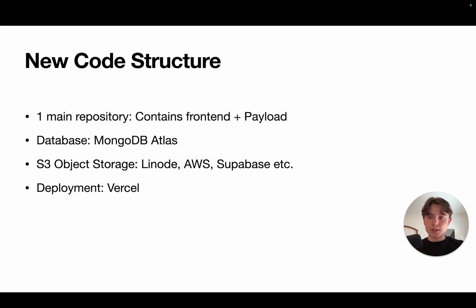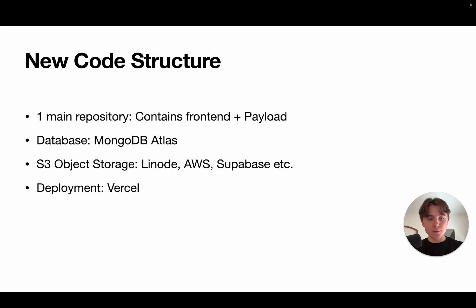Talking about code structure and infrastructure, we now have just one main repository. In the old series we were using two — one for the backend, one for the frontend. For the database we're going to use MongoDB Atlas because it provides a great free plan, but you could also self-host MongoDB, for example on Coolify. To store files like images and videos, we're going to use S3 object storage — you can get that from Linode, AWS itself, or Supabase — and in the next video I'll explain some alternatives. Deployment happens on Vercel: super simple, super straightforward.